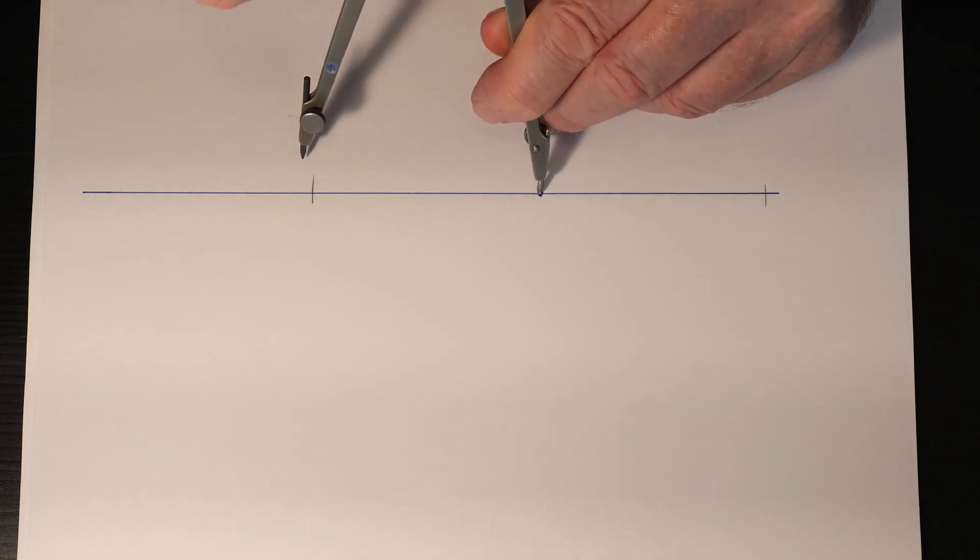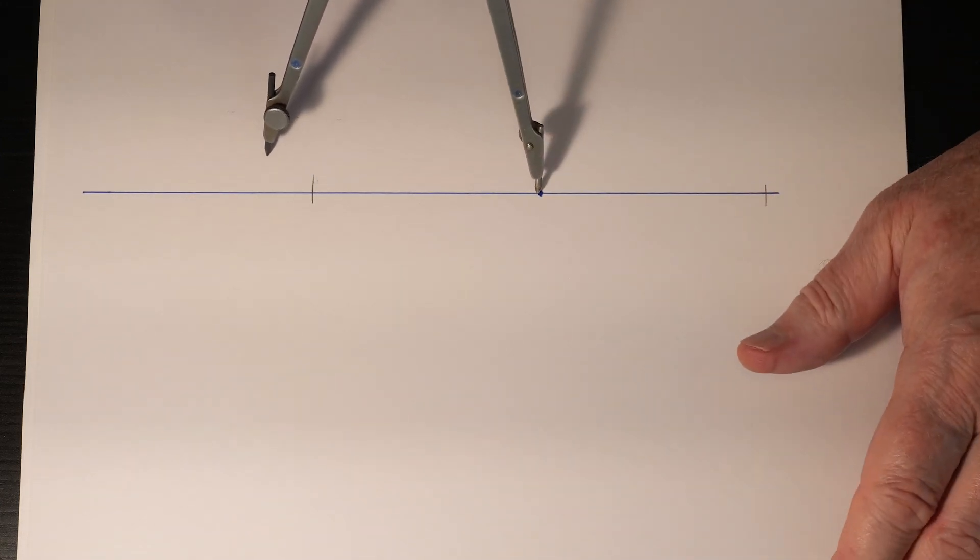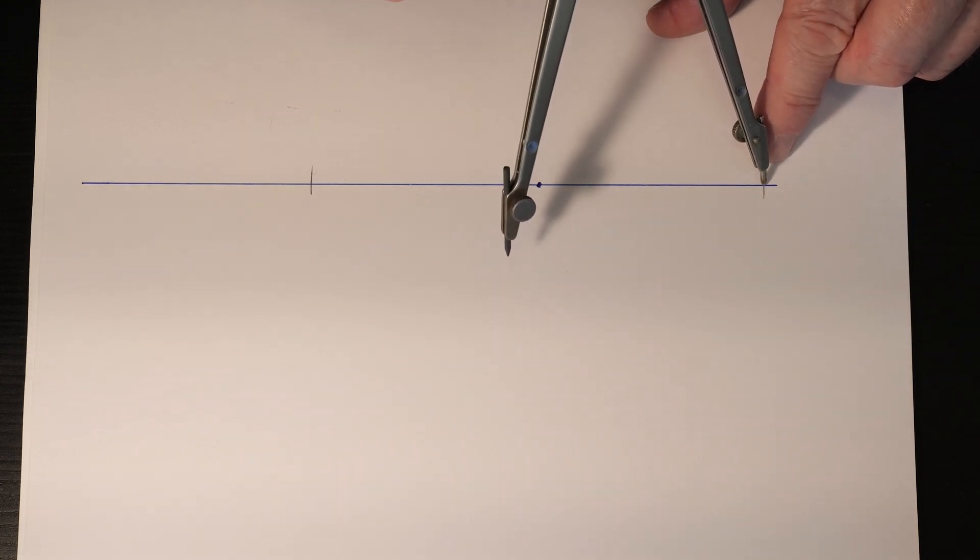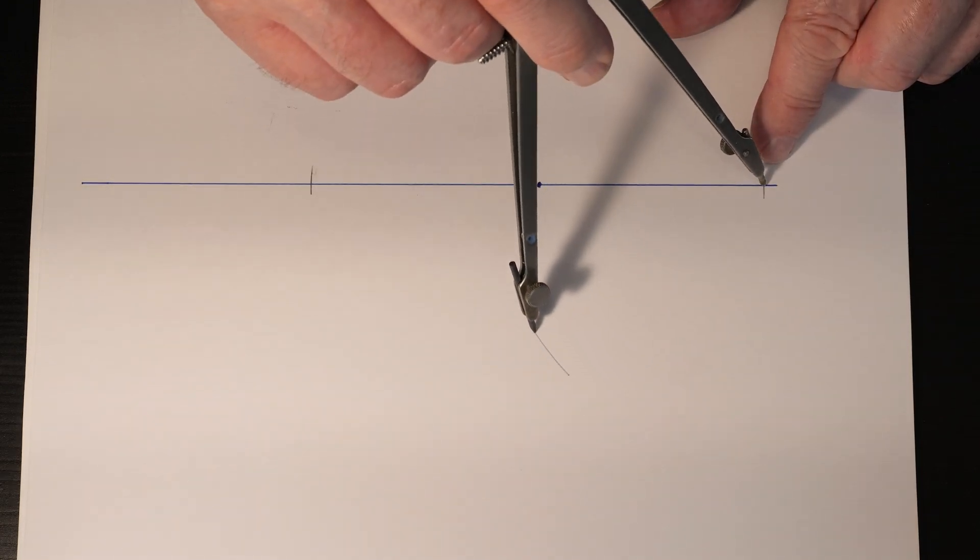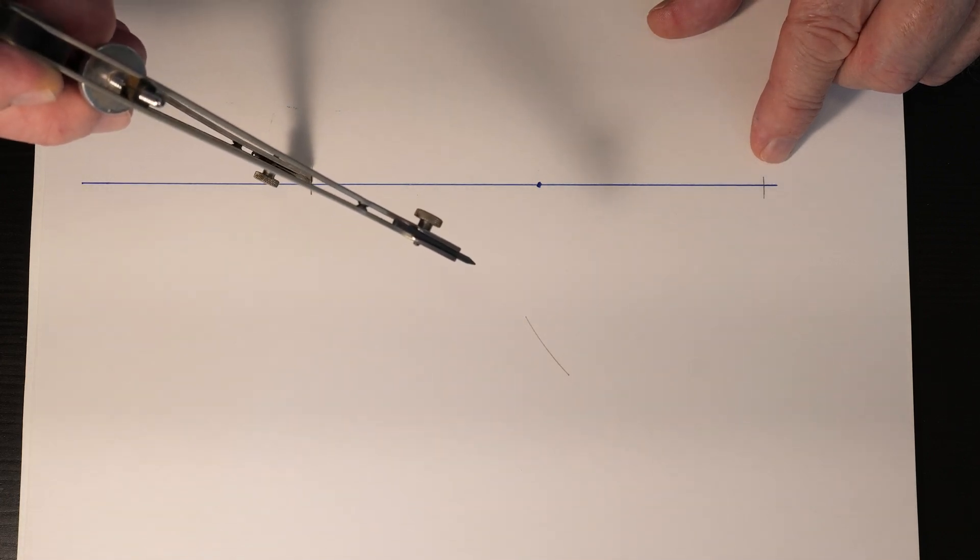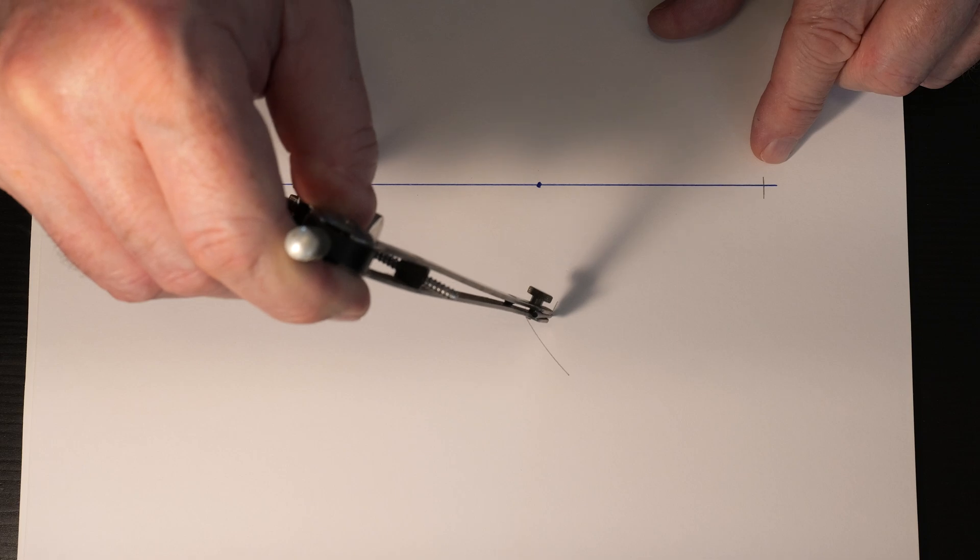Then you can make the spacing of the compass just a little bit longer. You're going to set the point of the compass on the intersection mark you made and come up here and make an arc, and then you're going to come back over to this one and make an arc.